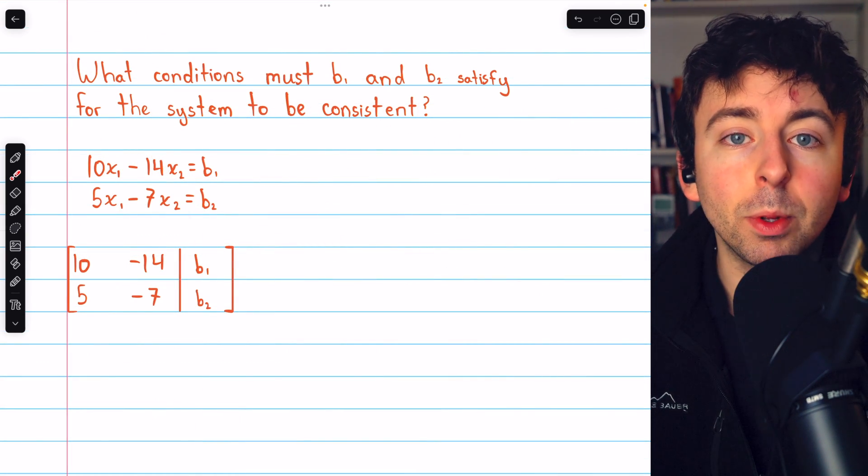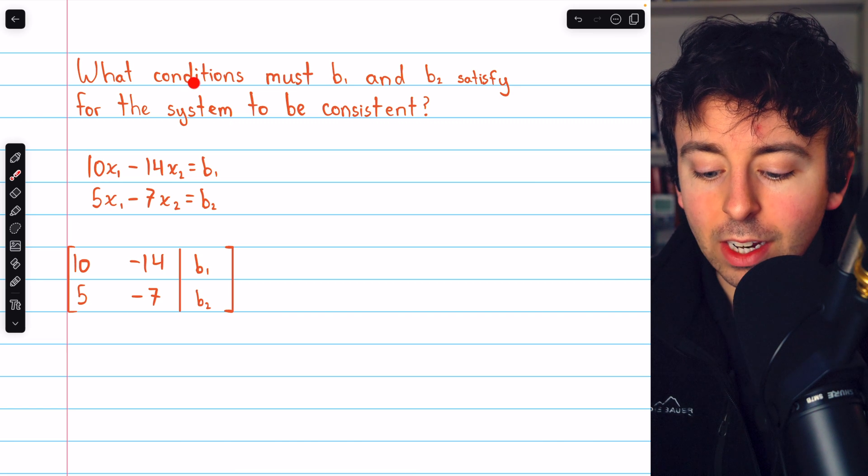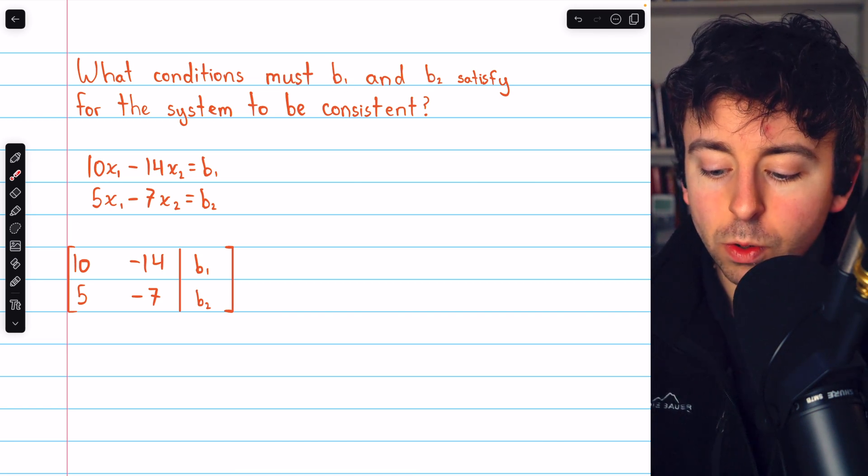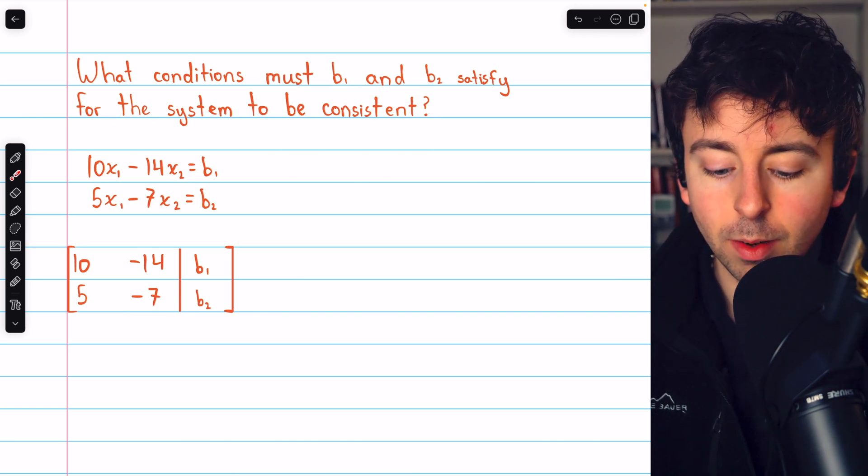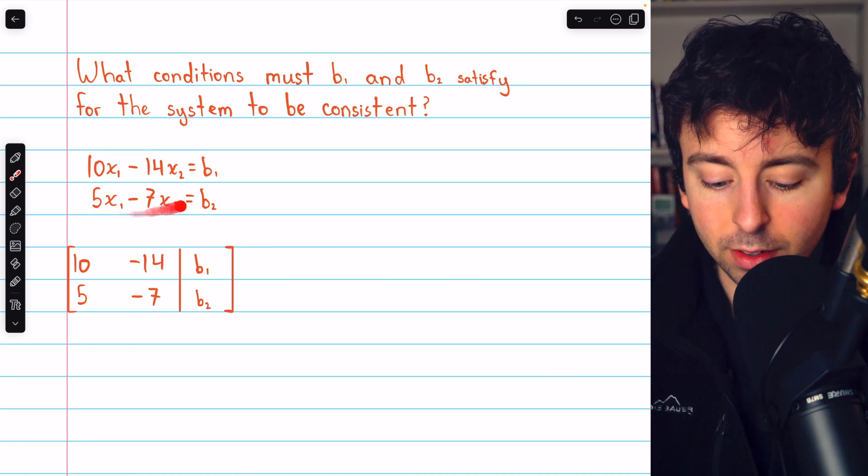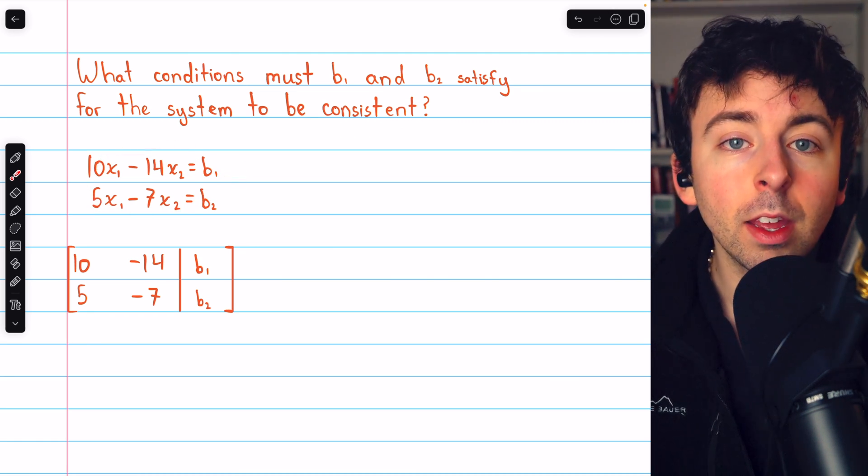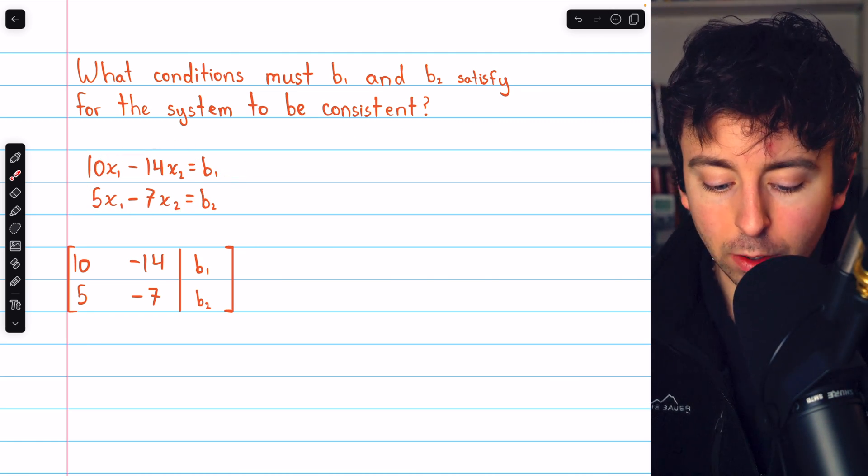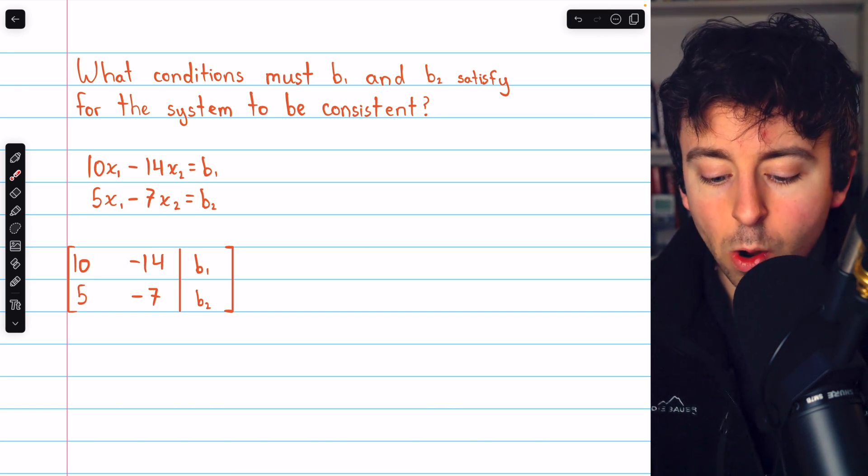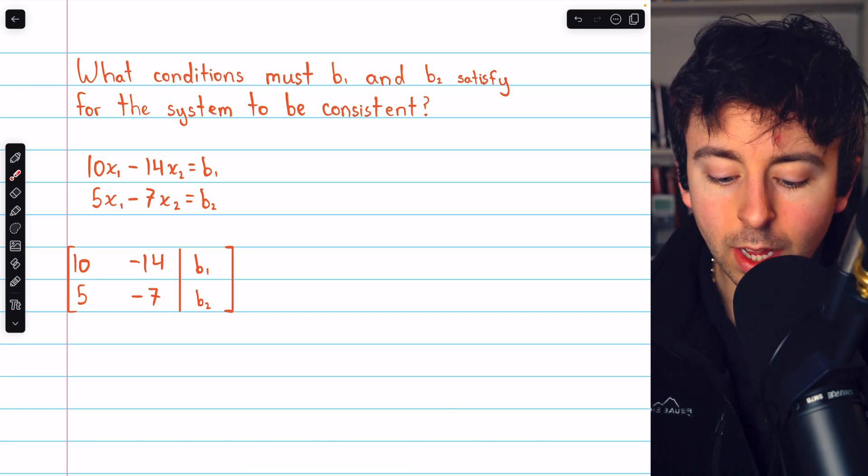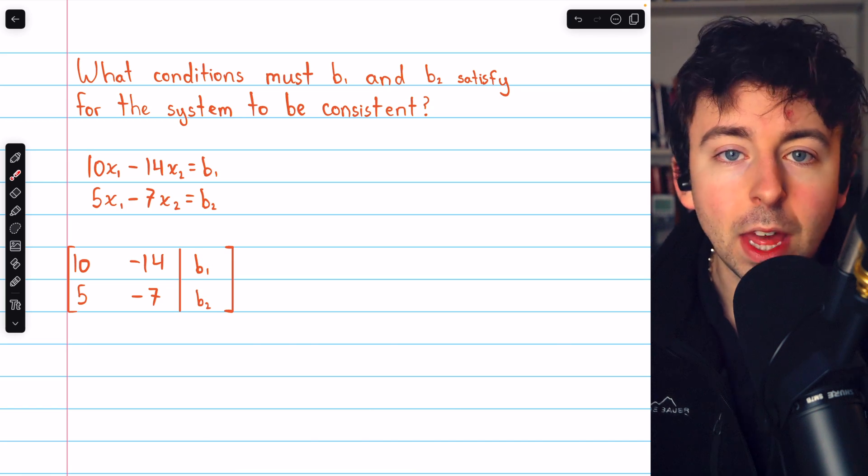Here's one more quick example you could try on your own. What conditions must b1 and b2 satisfy for the system to be consistent? Here's our system. There's b1, there's b2. We begin by creating the augmented matrix, coefficients of x1 in column 1, coefficients of x2 in column 2, and our constants on the right.